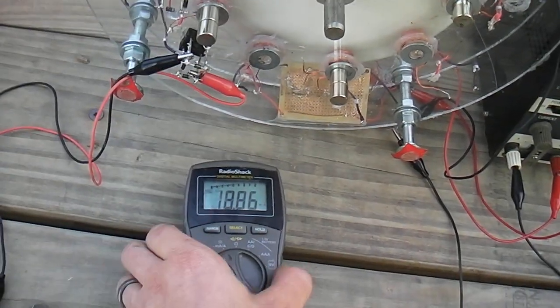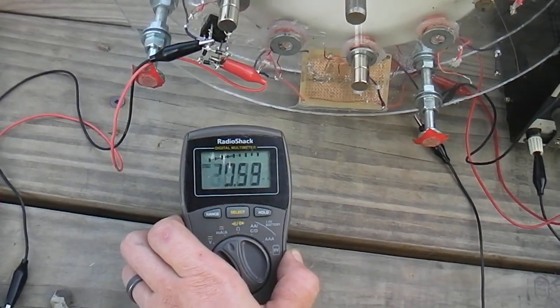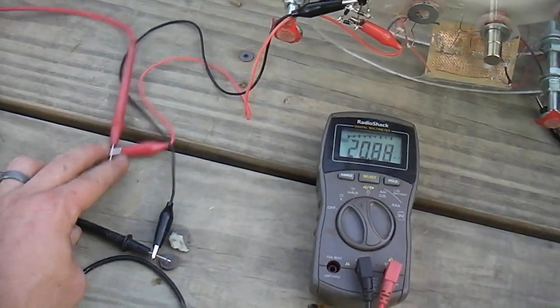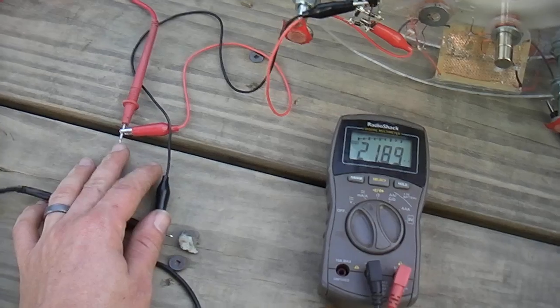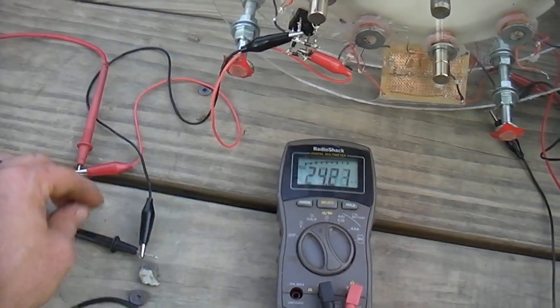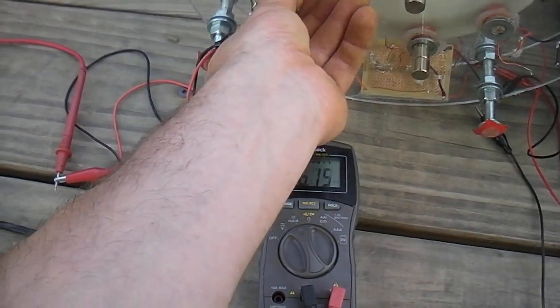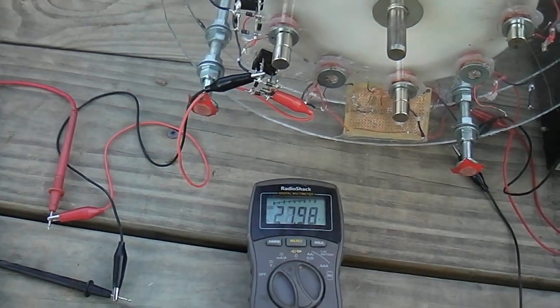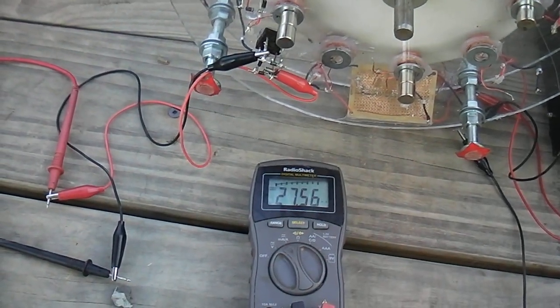You can see here we're already at 20 plus milliamps. I'm not running this through a capacitor either. And if I put a capacitor here, I could bring that up quite a bit. But I just thought that was really interesting, that just with the addition of these magnets, to get some milliamps out of this coil.